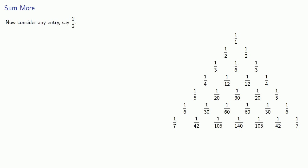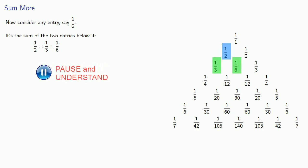Now consider any entry, say 1 half. It's the sum of the two entries below it, 1 third and 1 sixth. But 1 sixth is the sum of the two entries below it, 1 twelfth and 1 twelfth. So 1 half is 1 third plus 1 twelfth plus 1 twelfth.